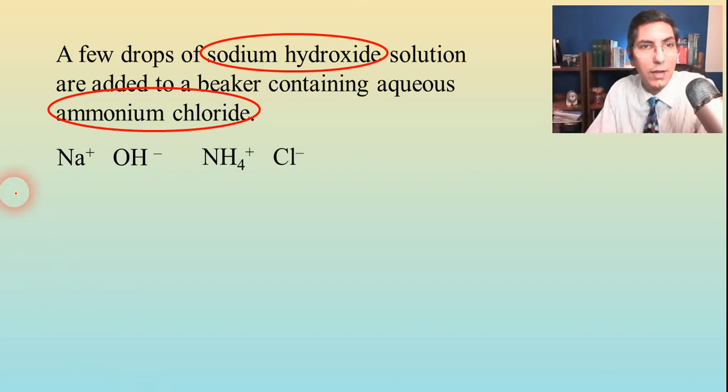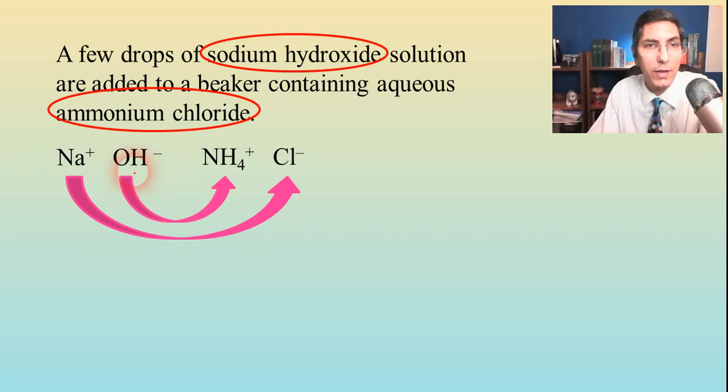And once again, the sodium is going to try to get with chloride and the ammonium tries to get with hydroxide. And which of those will make something? Well, we know that sodium and chloride ions aren't going to make a precipitate, are they? That's soluble.